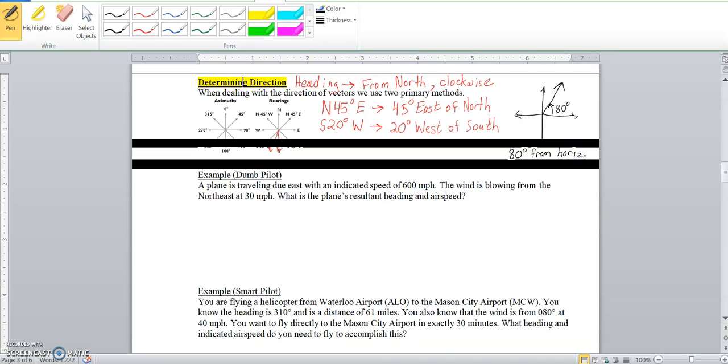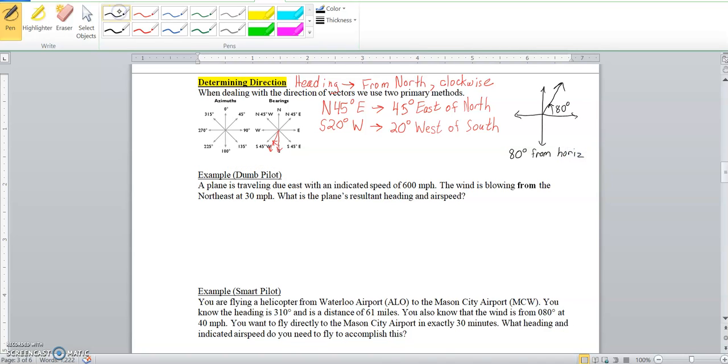So instead of 80 degrees from horizontal, I'm going to say that it was just 10 degrees, or actually 010. You'll see it written that way. So these mean the same thing, and it's more of your traditional just 010 or 10 degrees.